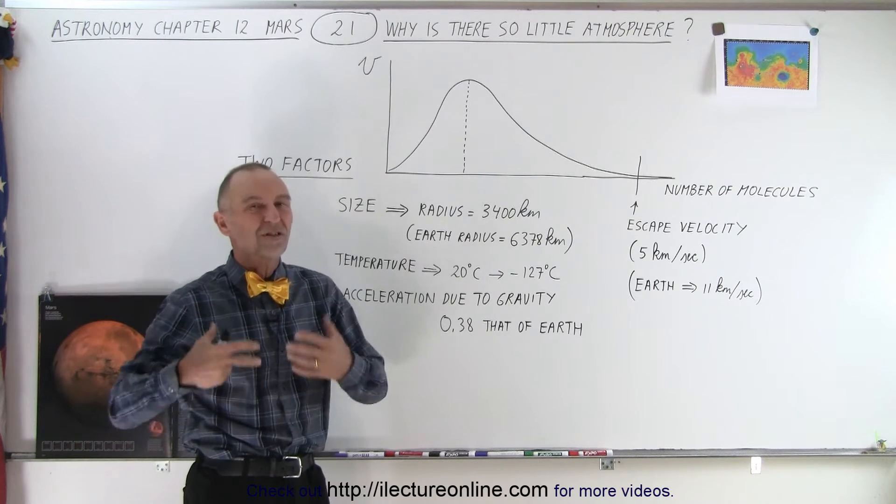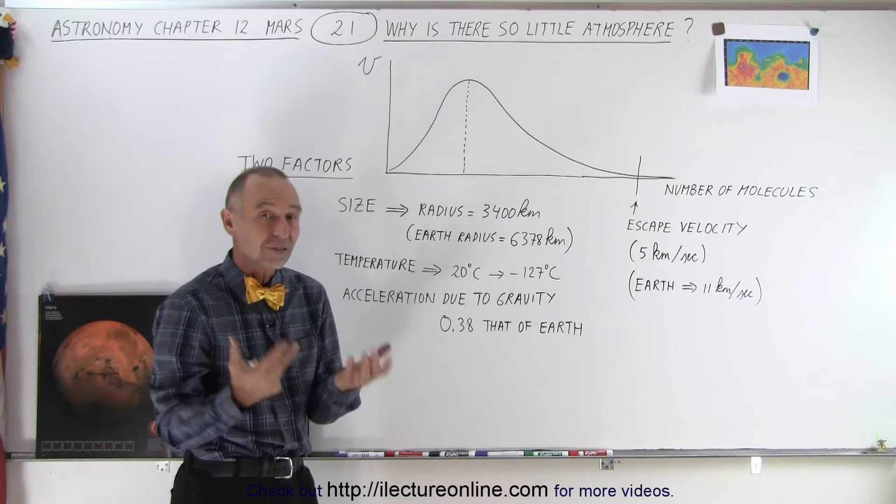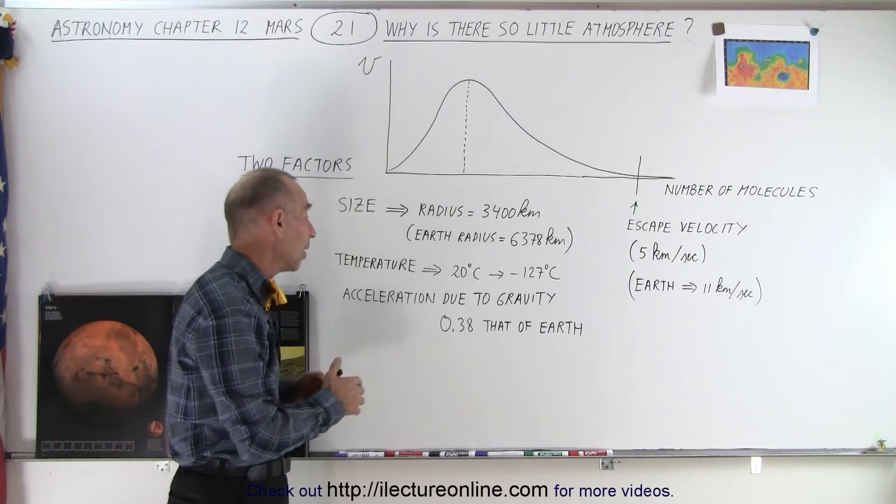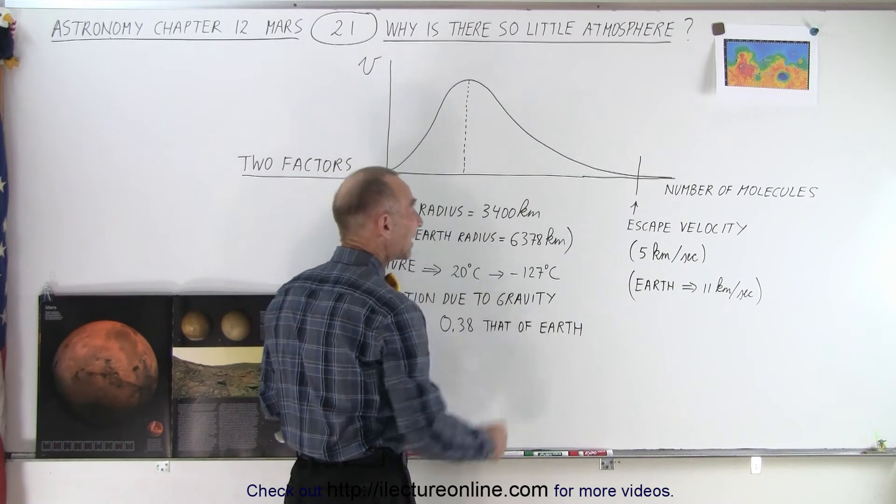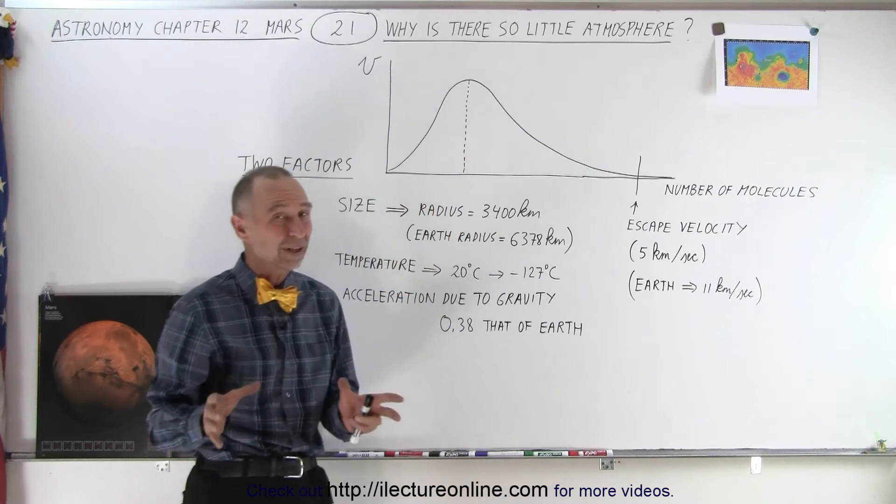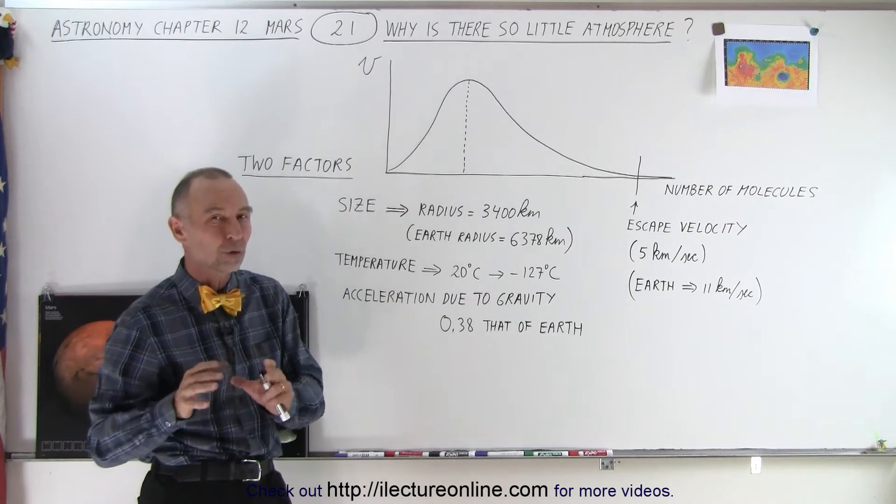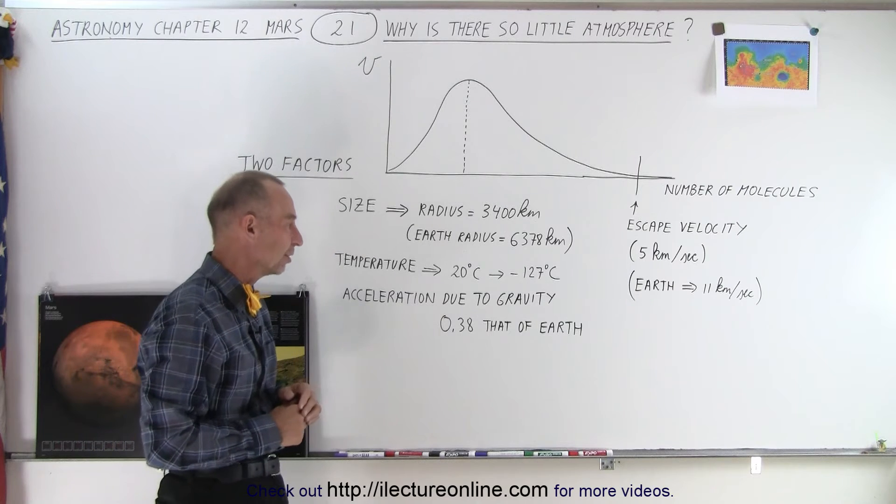Another factor, of course, is temperature. The hotter it is, the faster the molecules move, and we know that on Mars it can get pretty cold, with temperatures as low as minus 127 degrees centigrade, which is a lot colder than the coldest ever measured at the Antarctic.